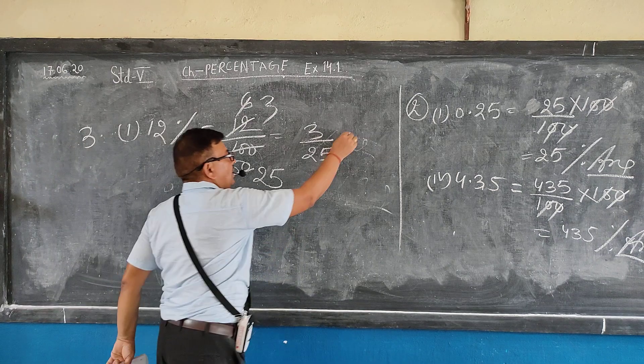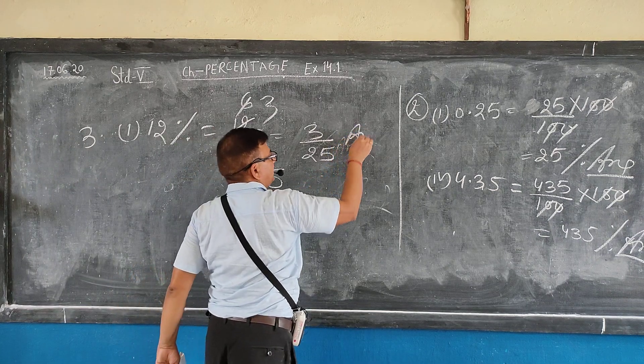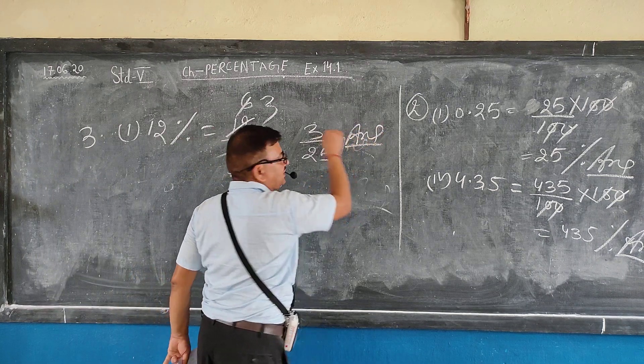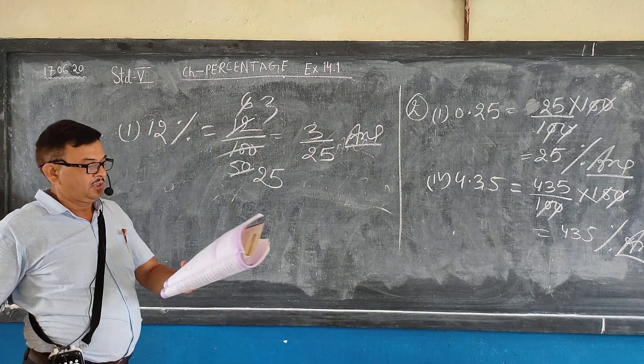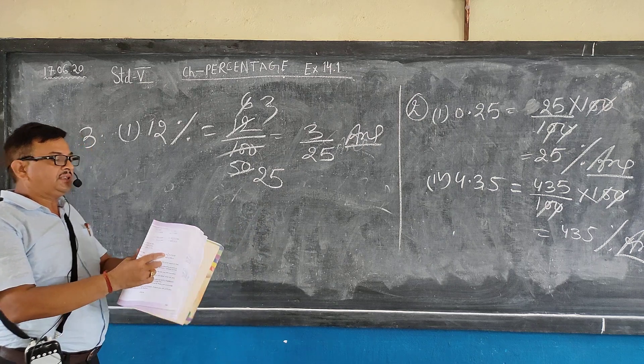This is your answer — 3 by 25 is the answer.